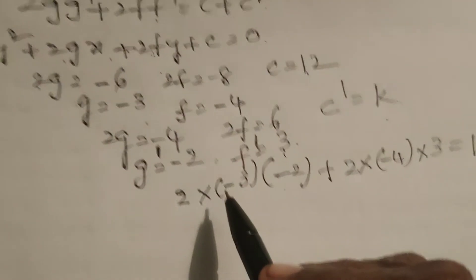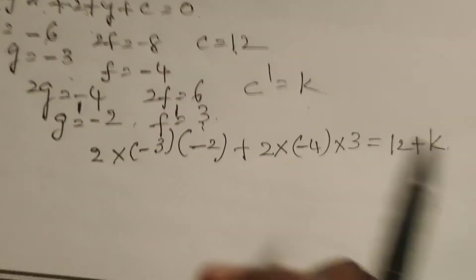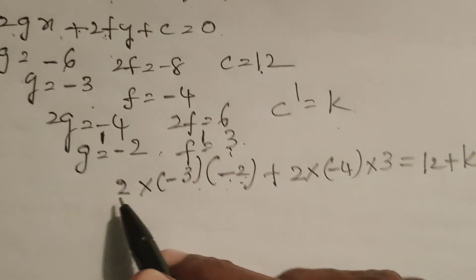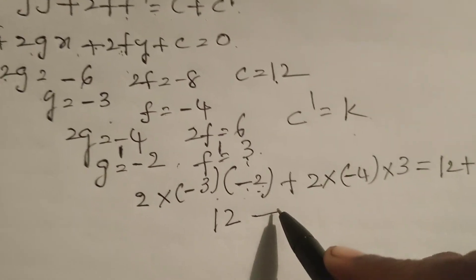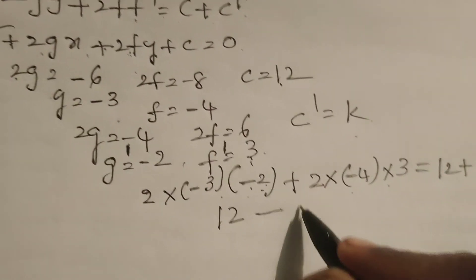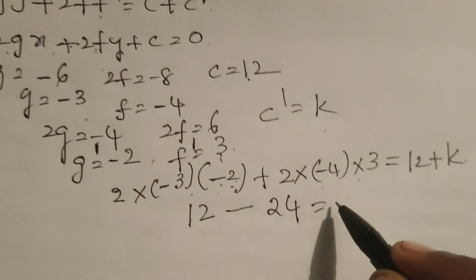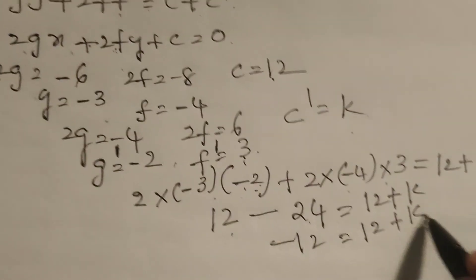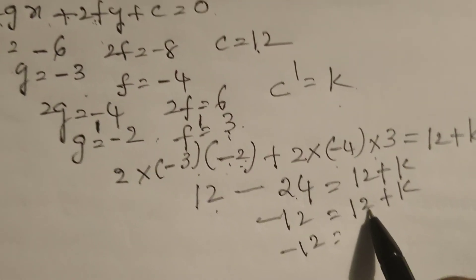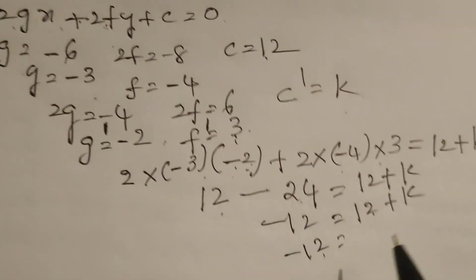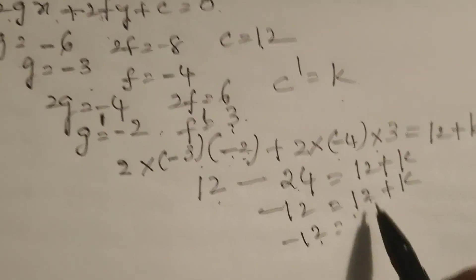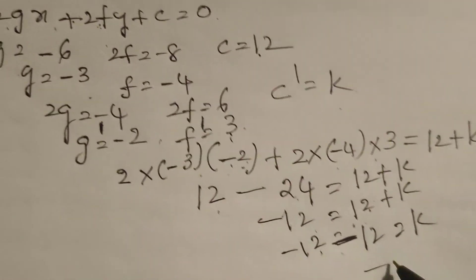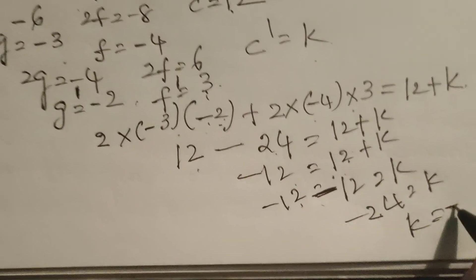Solving: 2 × (-3) × (-2) = +6, and 2 × 6 = 12. Then 2 × (-4) × 3 = -24. So 12 + (-24) = 12 + k, which gives -12 = 12 + k. Transposing, k = -12 - 12 = -24. Therefore k = -24.